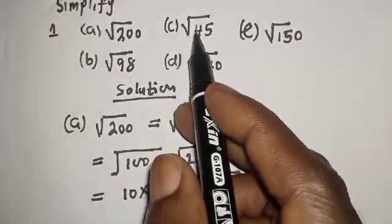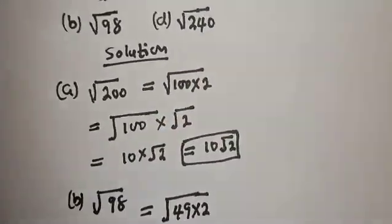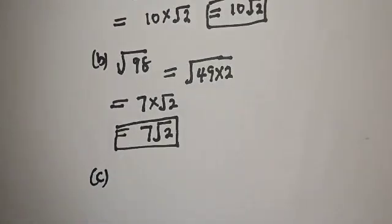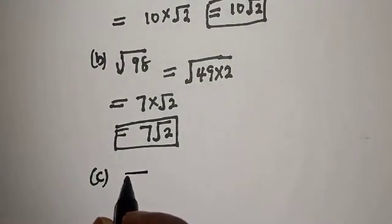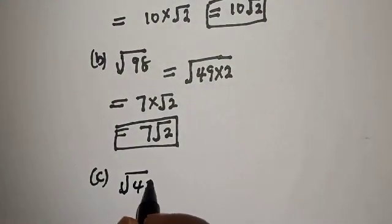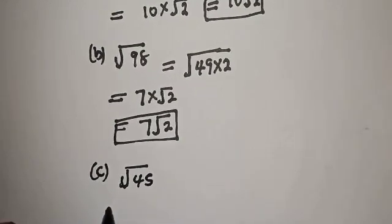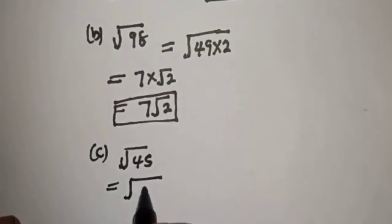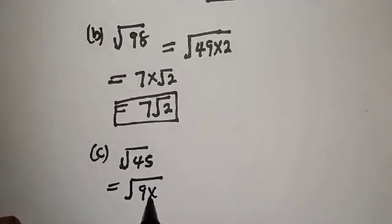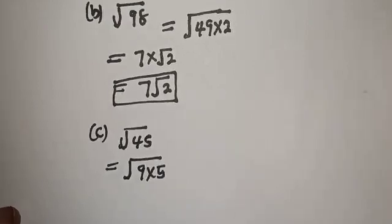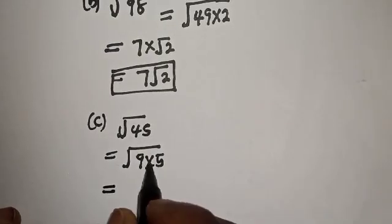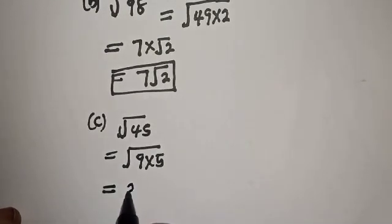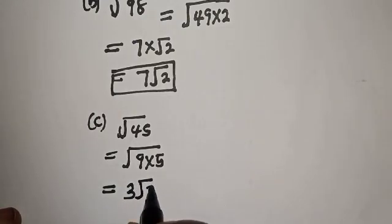Now let's consider (c): square root of 45. Square root of 45 equals square root of 9 times 5. Square root of 9 is 3, and square root of 5 is root 5. So the answer is 3 root 5.